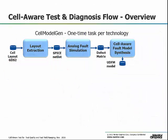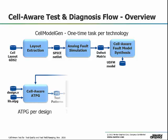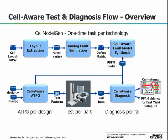The CellAware test flow begins by generating a cell-aware defect model in a format called UDFM — user-defined fault model. This model is then used to generate test patterns that target all testable physical defects for both cell internal and cell boundaries.